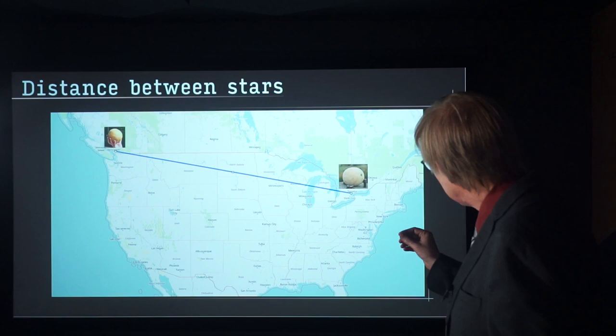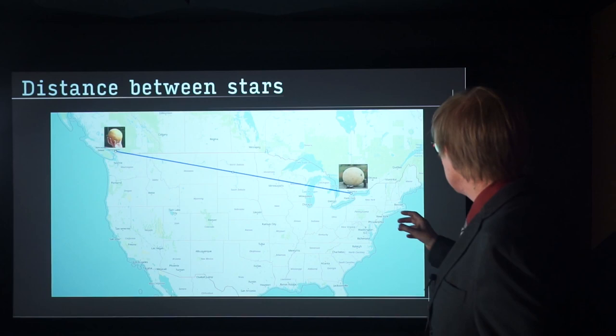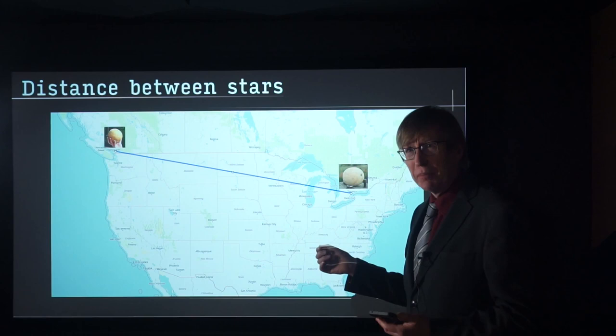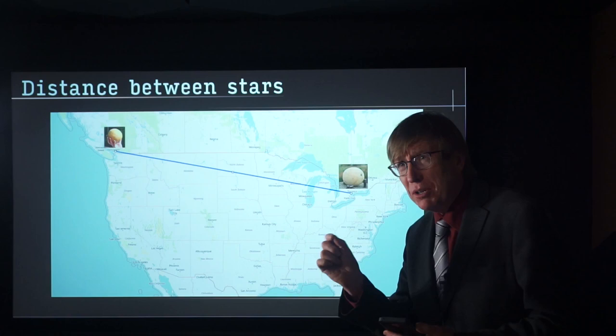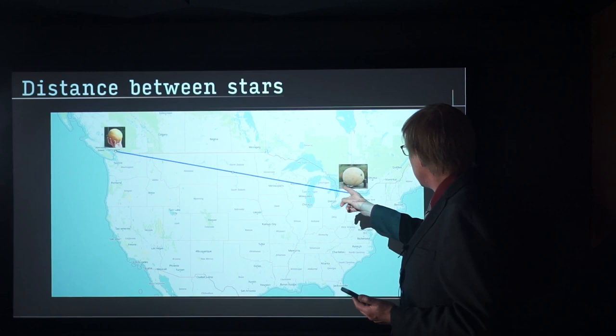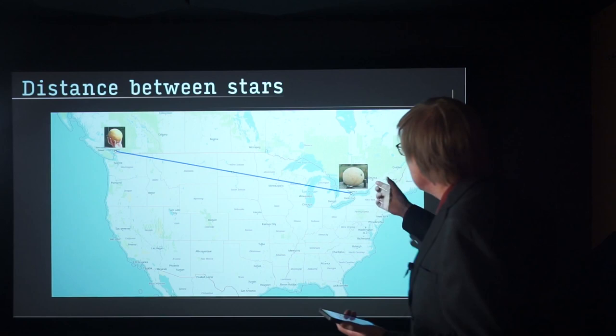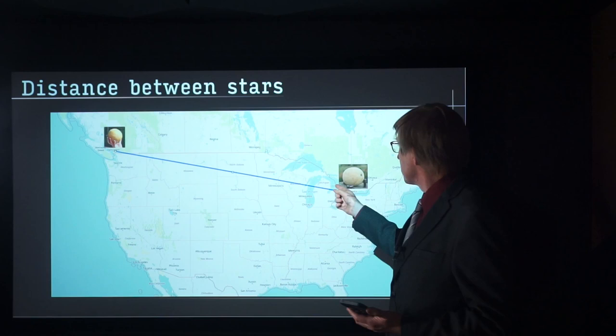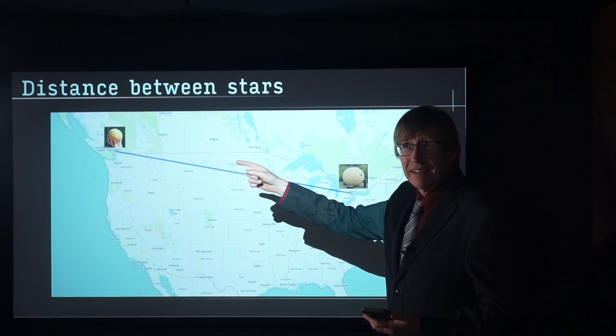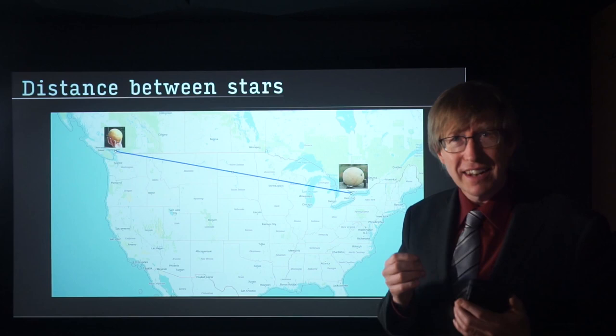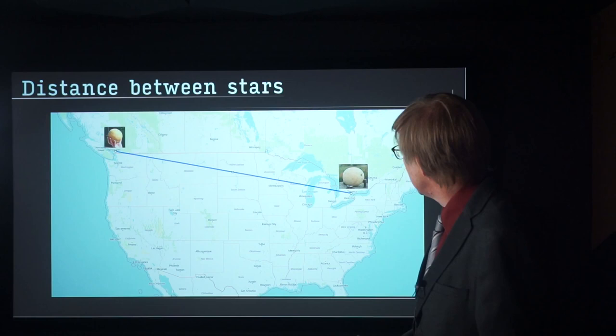When we scaled everything down by a factor of ten billion, the Sun becomes the size of a cantaloupe, the Earth becomes a millimeter — a tiny little grain of coffee ground. Neptune is a pea half a kilometer away. And in this scale model, the nearest star to the Sun is all the way in British Columbia. Between us and them is nothing — space.